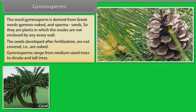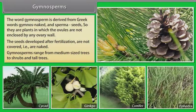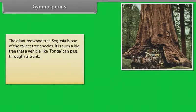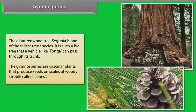Gymnosperms range from medium-sized trees to shrubs and tall trees. The giant redwood tree Sequoia is one of the tallest tree species — it is such a big tree that a vehicle like a tonga can pass through its trunk. The gymnosperms are vascular plants that produce seeds on scales of woody strobili called cones.